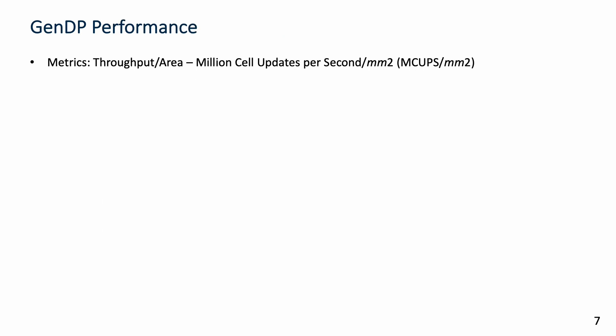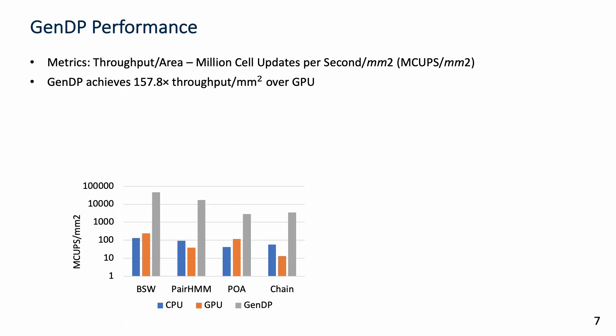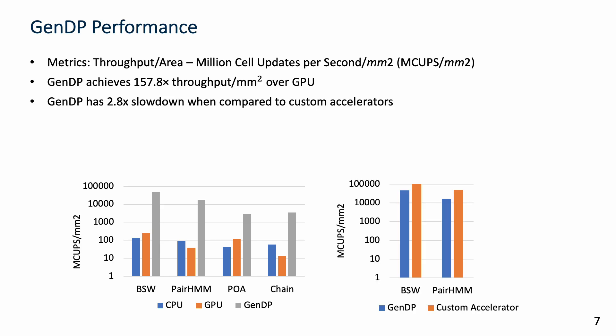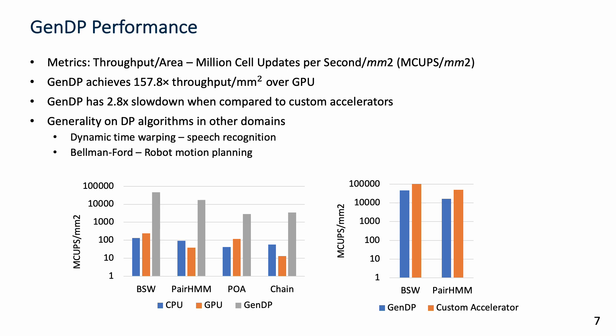We use throughput per area as the metric to evaluate its performance. GenDP achieves 158 times speedup over GPUs, but has around 3 times slowdown when compared with custom accelerators, because it sacrifices performance for programmability. We also demonstrate GenDP's generality on dynamic programming algorithms in other domains, such as speech recognition and robot motion planning.